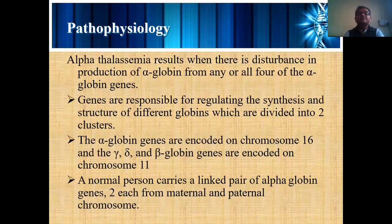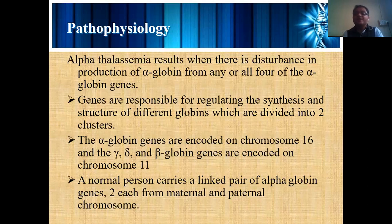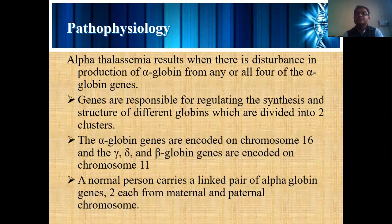Regarding the pathophysiology of Alpha Thalassemia: Alpha Thalassemia results when there is a disturbance in the production of alpha globulin from any or all of the alpha globulin genes. All four genes, or any alteration in a particular globin gene responsible for regulating the synthesis and structure of the different globulins, are divided into two clusters. The total synthesis and structure of hemoglobin depends entirely on these genes.